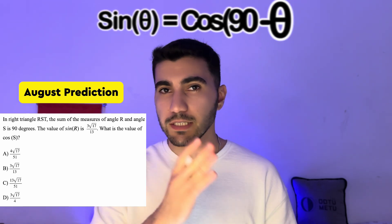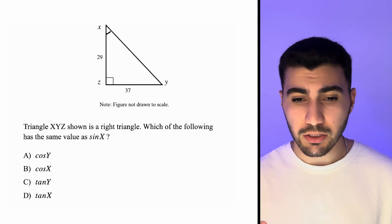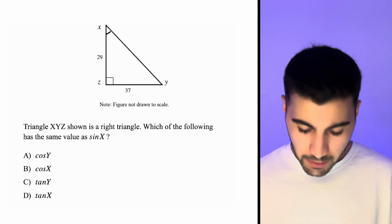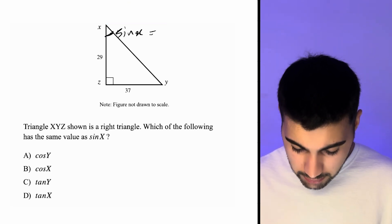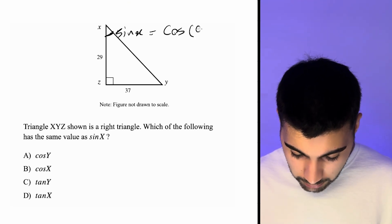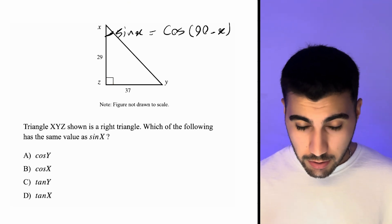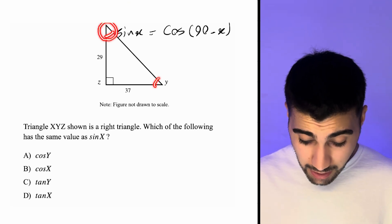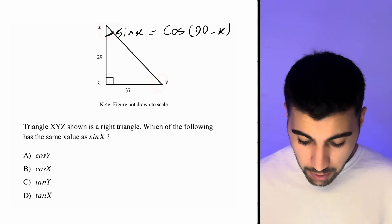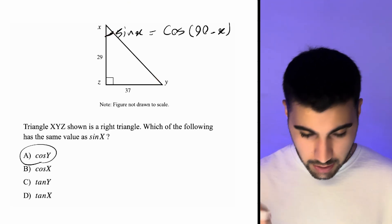The next predicted question was a complementary rule question: sine of θ equals cosine of (90° − θ). There were two complementary rule questions on the exam. Triangle XYZ is a right triangle — which of the following has the same value as sine of X? By the complementary rule, sine of X equals cosine of (90° − X). Inside the triangle, the angles sum to 180°, so the other non-right angle Y equals 90° − X. Therefore sine of X equals cosine of Y, and the answer is choice A.